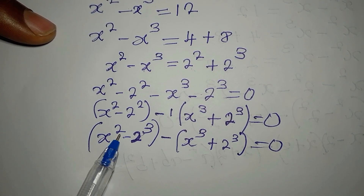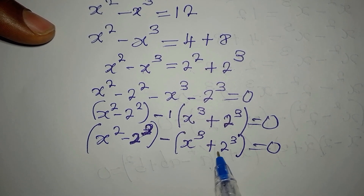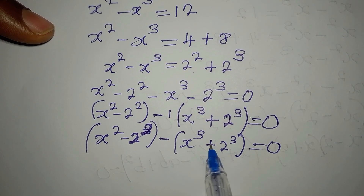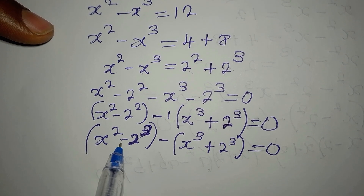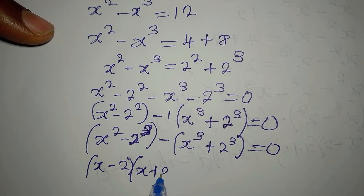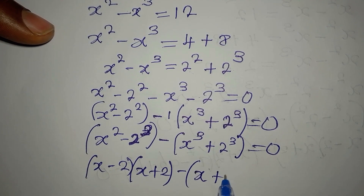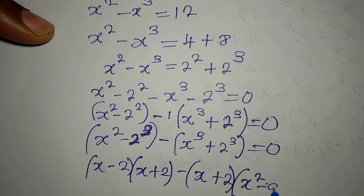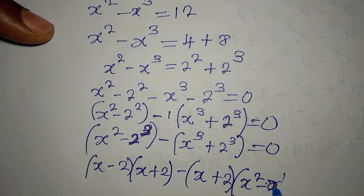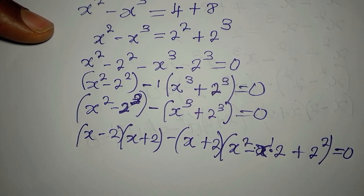x squared minus 2 squared is a difference of two squares. x cubed minus 2 cubed is a difference of two cubes. For the difference of two squares we get x minus 2 into x plus 2, and for the difference of two cubes we get x plus 2 into x squared minus x times 2, plus 2 squared.